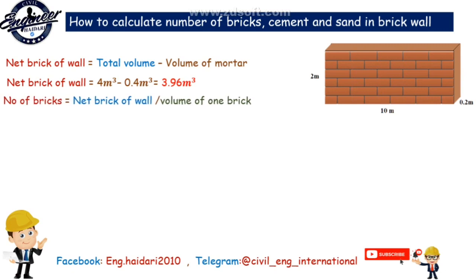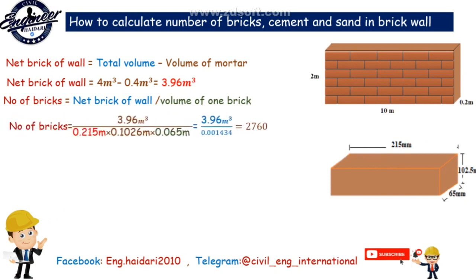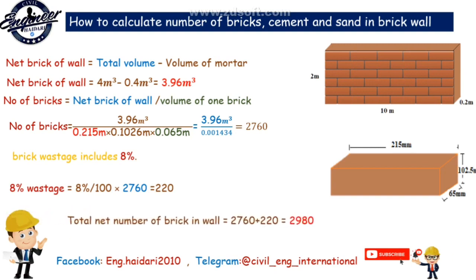Number of bricks equals net brick volume divided by volume of one brick. Number of bricks equals 3.96 cubic meter divided by 0.001434 equals 2760 bricks. Brick wastage is 8%: 8% divided by 100 multiplied by 2760 equals 220 wastage bricks. Total net number of bricks in wall equals 2760 plus 220 equals 2980 bricks.